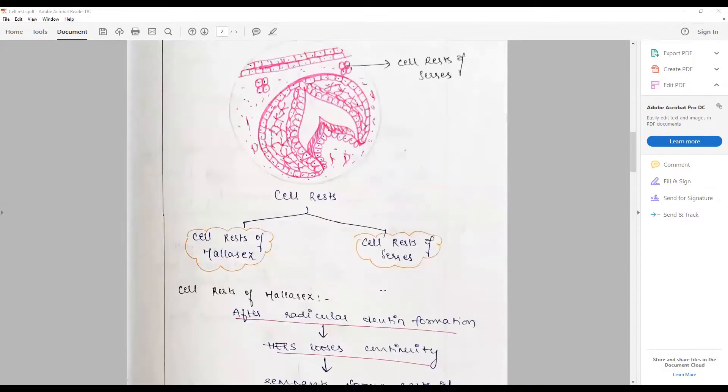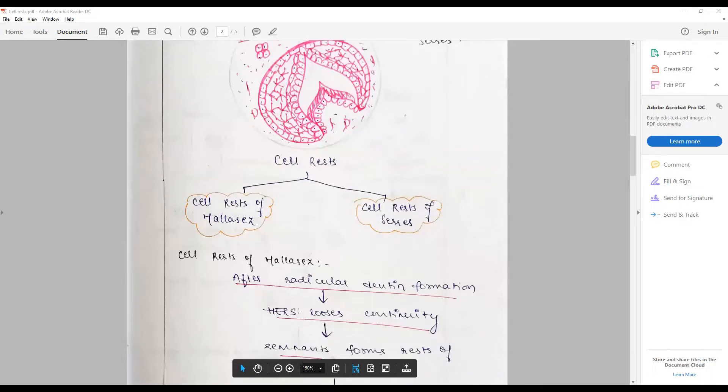The cell rest of Malassez forms after radicular dentin formation when the HERS, the epithelial, loses its continuity, exposing the radicular dentin to the newly formed outlying dental sac, causing or stimulating the cementum formation. At this point in time, islands of HERS may persist to adulthood lying down in the periodontium, forming the cell rest of Malassez.